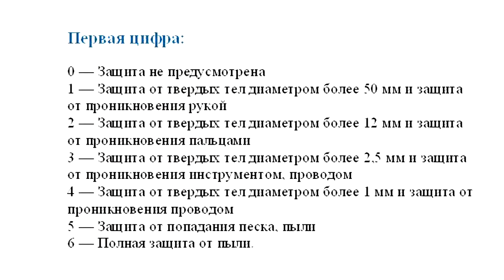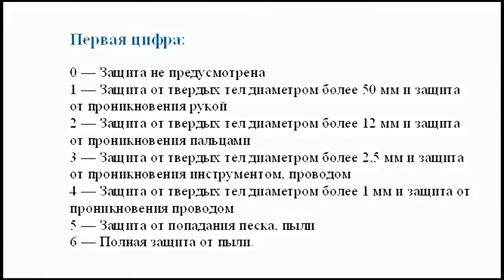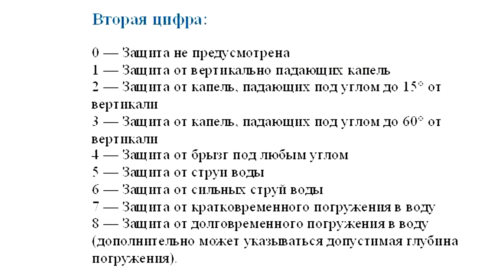Digits from 0 to 6 are used for the first digit. The higher the number, the stronger the protection of the electrical equipment. For example, 1 stands for protection against solid objects of diameter greater than 50 mm, then protection against penetration by hand, and 6 is complete protection against dust.